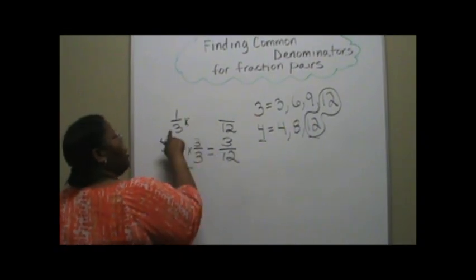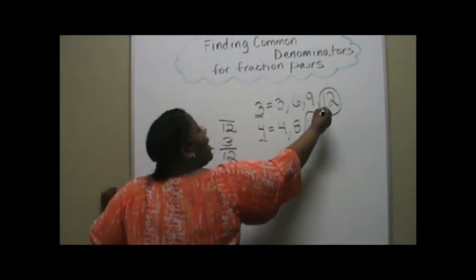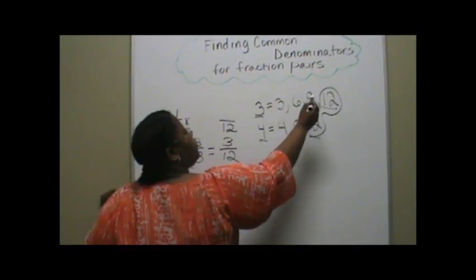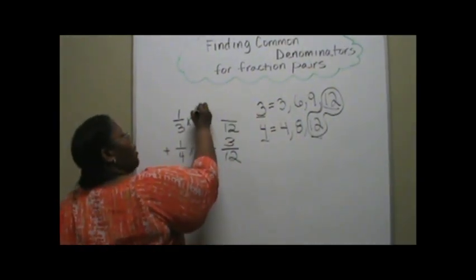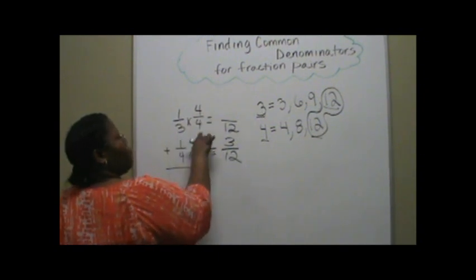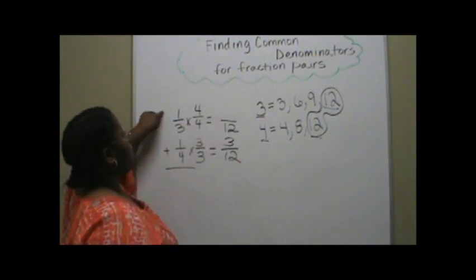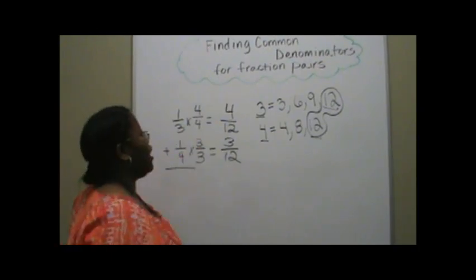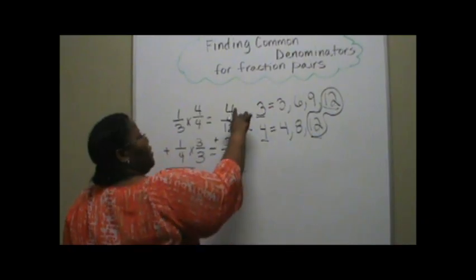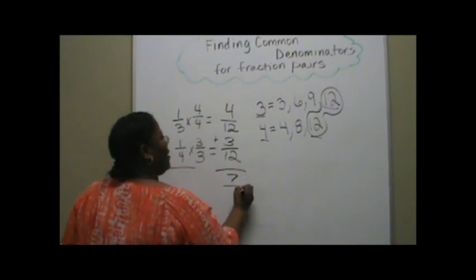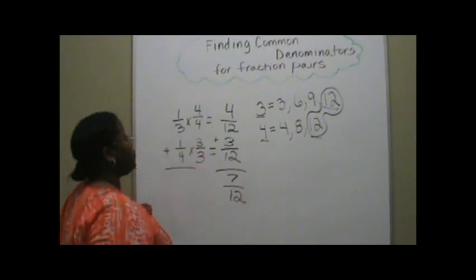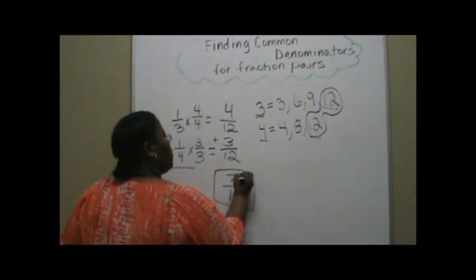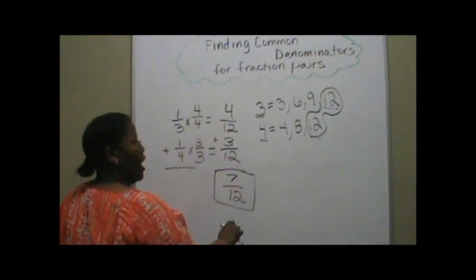What you do to one side, you do to the other side. Now let's do the same up here. How did we get three to 12? Three times what gave us 12? It was four. If you're unsure, just count down: three times one, three times two, three times three, three times four. So again, we're taking the whole number as before — three times four gave us 12, and one times four gives us four. Now we have like denominators, and once you have like denominators, you can add the numerators four and three, which is seven, and just bring down the denominator. So the answer to one-third plus one-fourth is seven-twelfths, and the way we got that is by finding the common denominator.